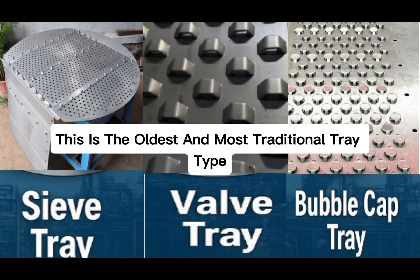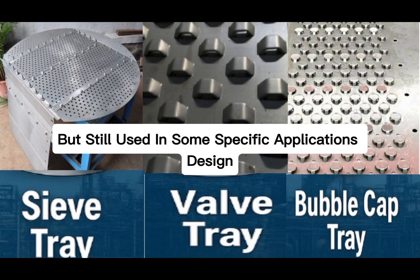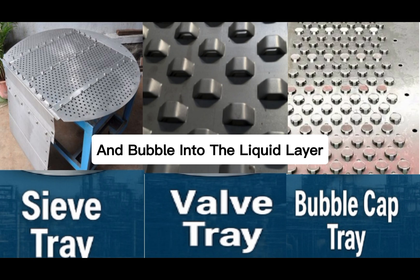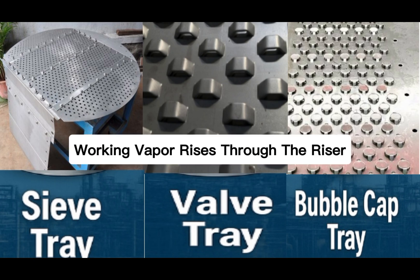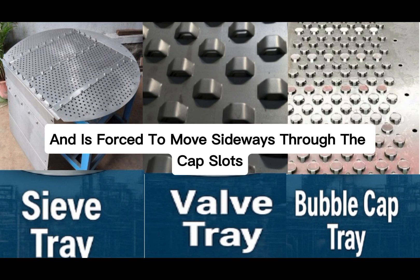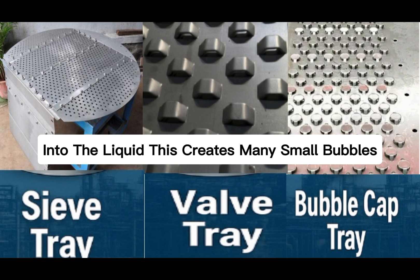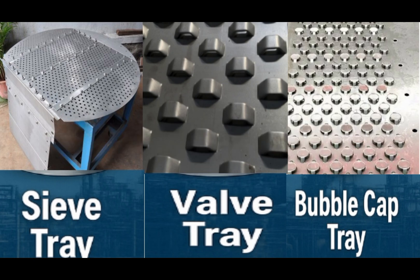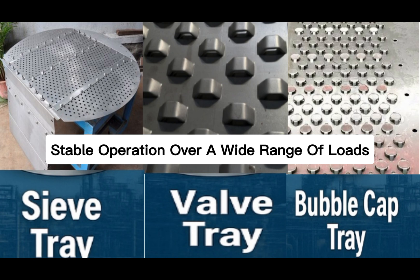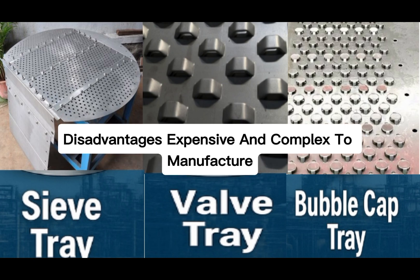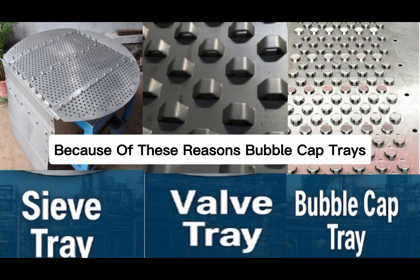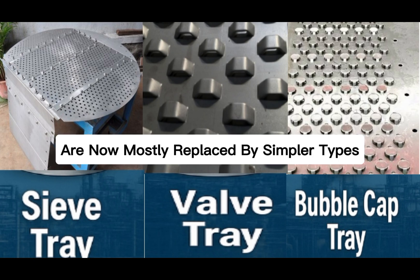Bubble cap trays are the oldest and most traditional tray type, but still used in some specific applications. A bubble cap tray has risers — also called chimneys — with caps on top. Each cap has slots or holes that allow vapor to pass through and bubble into the liquid layer. Vapor rises through the riser, hits the cap, and is forced sideways through the cap slots into the liquid, creating many small bubbles and giving excellent vapor-liquid contact. Advantages: works even at very low vapor rates, no weeping, and stable operation over a wide range of loads. Disadvantages: expensive and complex to manufacture, high pressure drop, and difficult to clean and maintain. Because of these reasons, bubble cap trays are now mostly replaced by simpler types like sieve or valve trays.